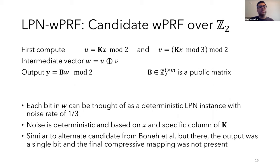So it turns out that this candidate is actually quite similar to the alternative weak PRF candidate proposed by Boneh et al., but with a couple key differences. For one, their output was a single bit and basically was the intermediate vector. And second, because of this, they did not have this final linear compressive mapping using B. So from a cryptanalysis standpoint, having multiple output bits decreases security. But from our analysis, having the final compressive mapping offsets this loss.